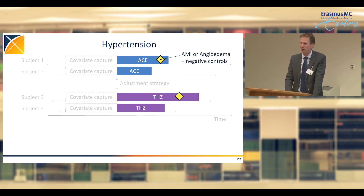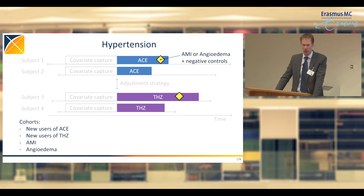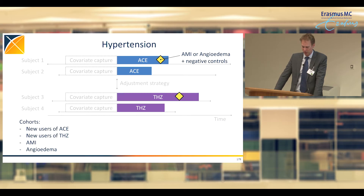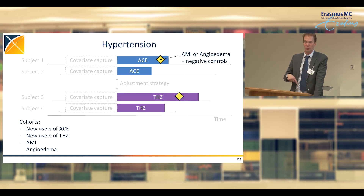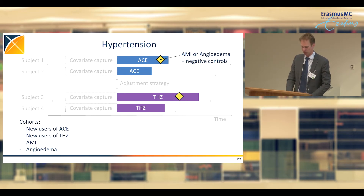Negative controls are a check on the adjustment strategy — if we apply the same methods, we would expect to see no effect for those outcomes. All of our tools build on standard building blocks: cohorts. In this case, we're using four cohorts: new users of ACE inhibitors, new users of thiazides or thiazide-like diuretics, a cohort of acute myocardial infarction, and a cohort of angioedema. These are the same cohorts Anthony used in his characterization study and Jenna used in her prediction studies — reusable objects defined once and used in multiple use cases.